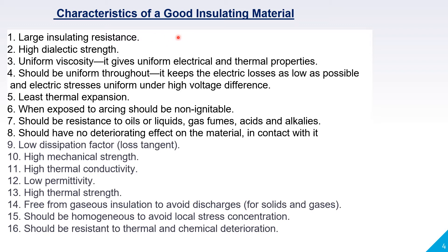What are the characteristics of a good insulating material? Large insulation resistance, high dielectric strength, uniform viscosity. It should be uniform throughout so that electrical losses are as low as possible and electrical stresses are minimized. It should have least thermal expansion, and when exposed to arcing it should be non-ignitable. Insulating materials should be resistant to oil, liquids, gas fumes, acids, and alkali. They should have low dissipation factor or loss tangent, high mechanical strength, high thermal conductivity, low permittivity, and high thermal strength.